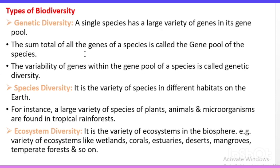Next, species diversity is the variety of species in different habitats on the earth — like the large variety of species of plants, animals, and microorganisms found in tropical rainforests. Different species live in a specific area or specific habitat. We can see species diversity in both agriculture as well as natural systems. On the screen I have given an example about tropical rainforests, showing a variety of species like plants, animals, and microorganisms.